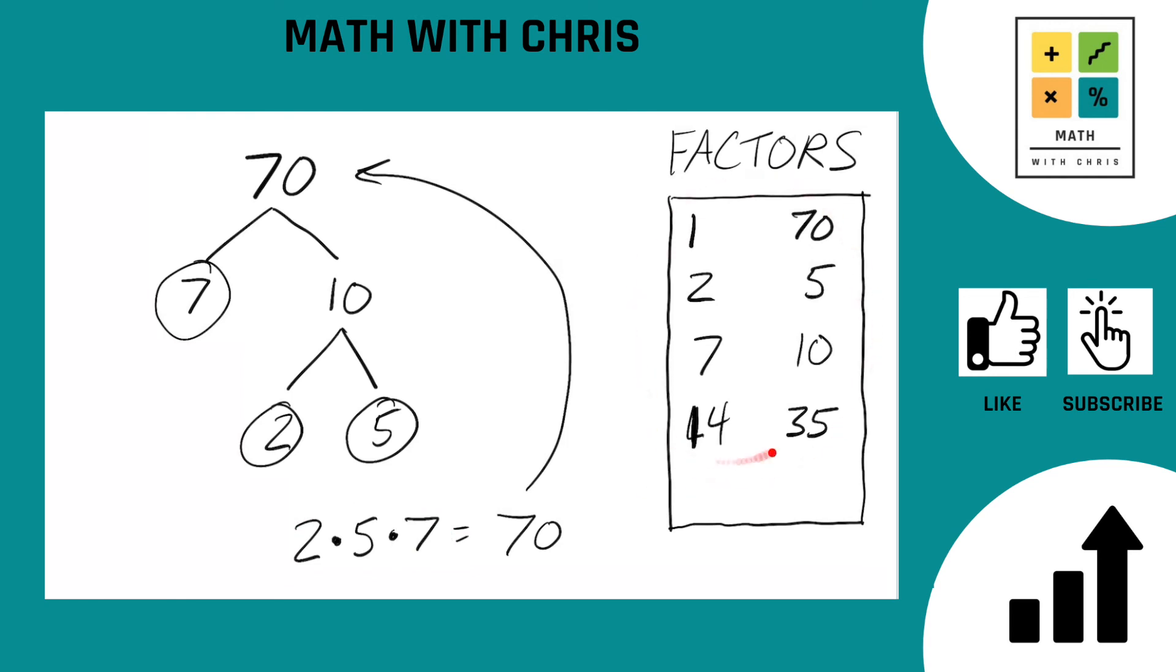We're done finding the factors of 70. We got 8 of them here. We always want to have an even number of factors unless it's a perfect square, which it's not. So an even number of factors is correct. The factors of 70 are in order: 1, 2, 5, 7, 10, 14, 35, and 70. That's all of them. That's a wrap. Those are the factors of 70.